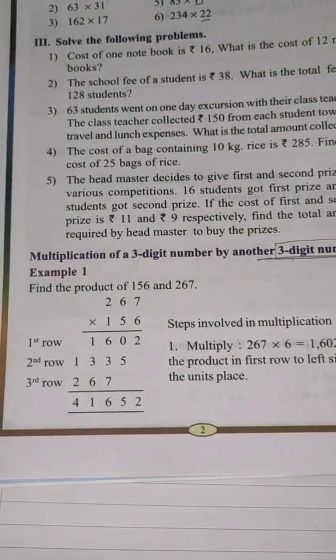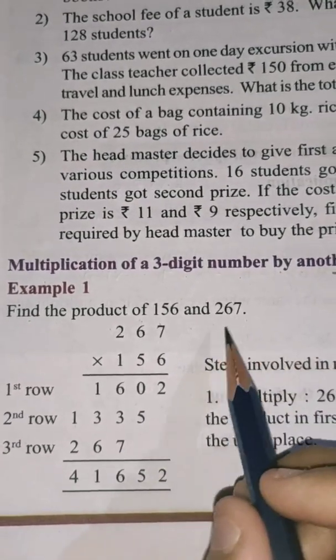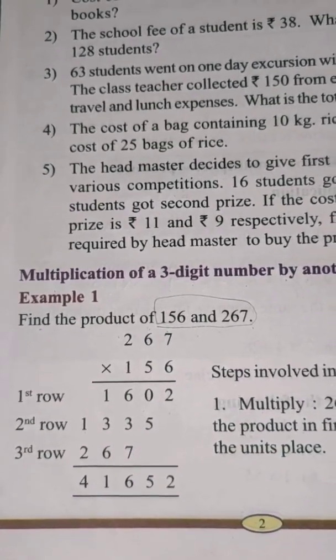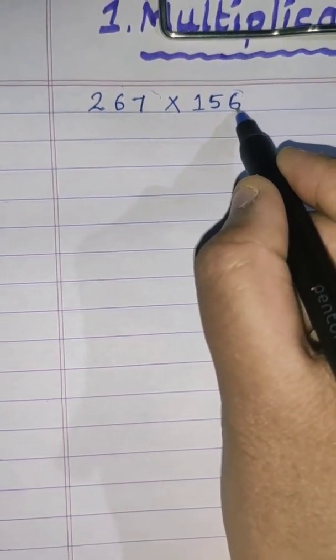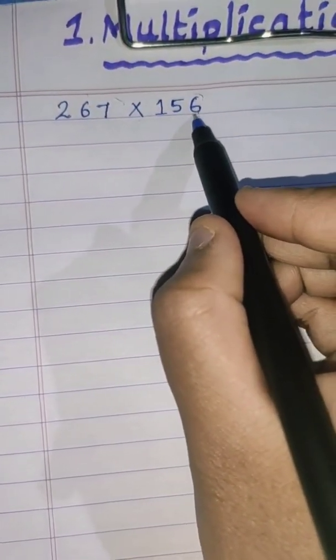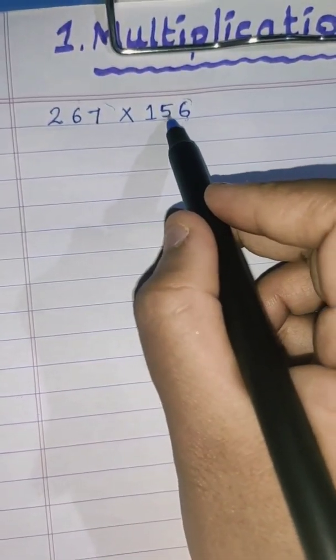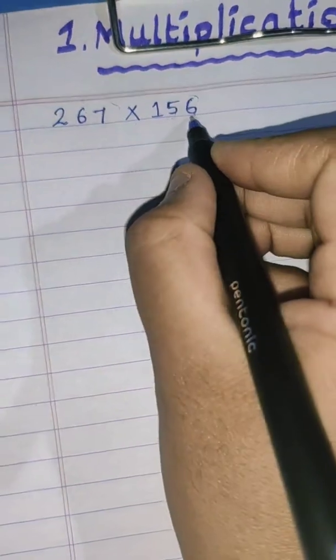We will take one example: find the product of 156 and 267. Let's see how to do it. I have written the same example as 267 into 156. You already know how to do multiplication — we always start with the number in the unit place. So here, 6 is in the unit place of 156, and 7 is in the unit place of 267. We will first multiply the unit place digit, then the tens place digit 5, then the hundreds place digit 1.